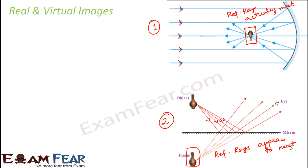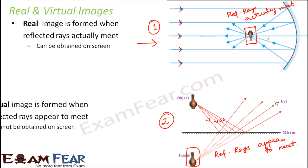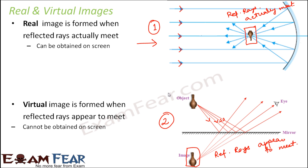Based on whether the reflected rays actually meet or merely appear to meet, we have two types of images: real image and virtual image. A real image is formed when reflected rays actually meet, and this image can be obtained on a screen. The image is formed on the same side as the object. For a virtual image, the image is formed on the other side of the mirror, so you cannot obtain it on a screen.